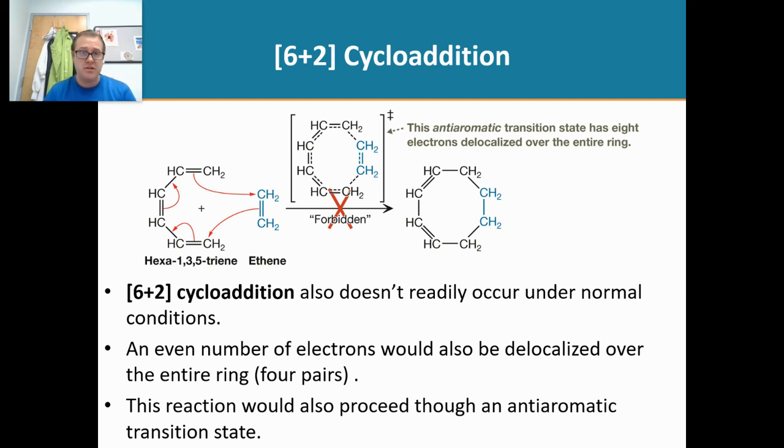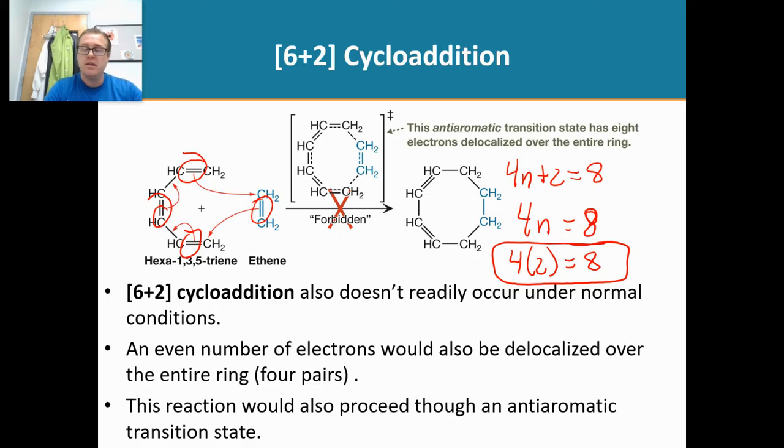Now, is a 6 plus 2 cycloaddition reaction allowed? Shown right here. Can that be done? Well, we go through the Huckel's rules. And how many pi electrons are going to be in that transition state? 2, 4, 6, 8. So if we try to find a statement or an integer that makes that statement true, you will find that you won't find one. There's no number that you can plug in there to make that equation true. But you can find an equation to make that true. 4 times 2 equals 8. And so this 6 plus 2 cycloaddition reaction is going to be forbidden because it would go through an anti-aromatic transition state. So that does not happen.